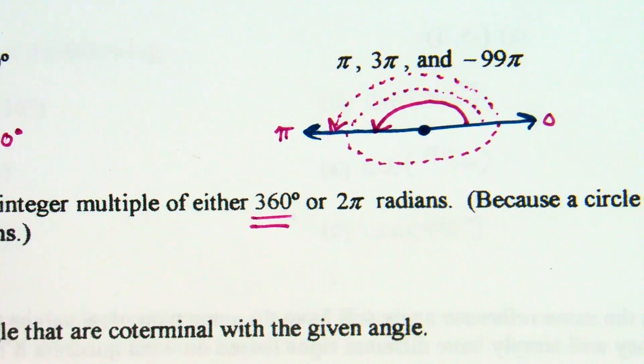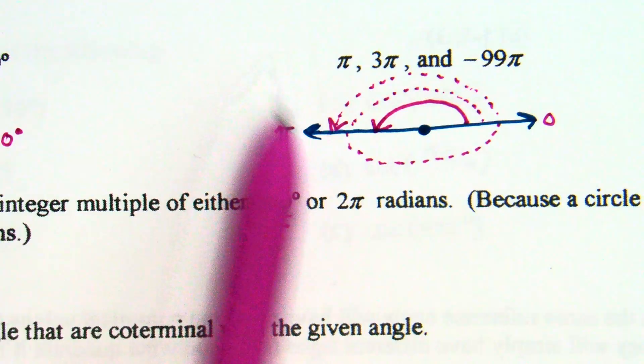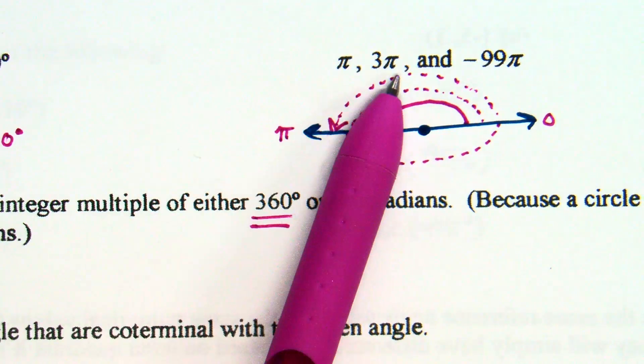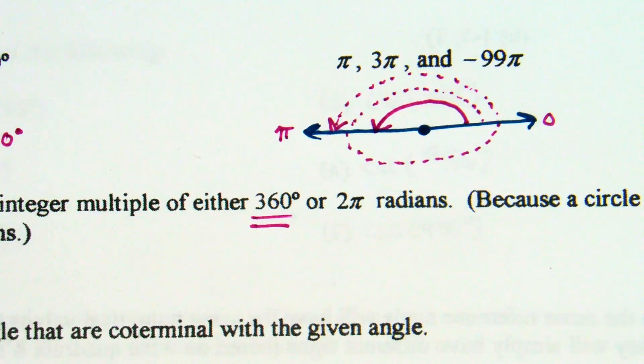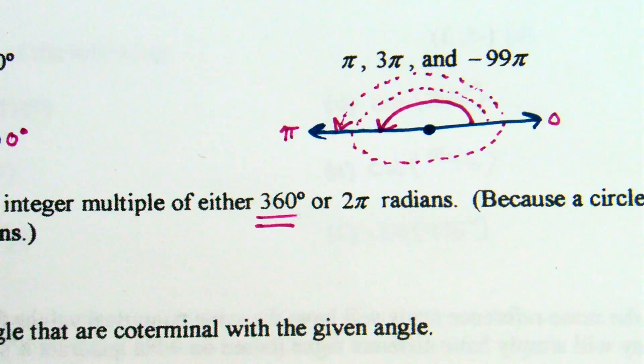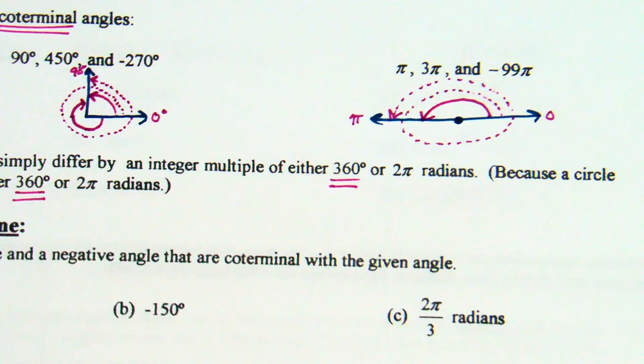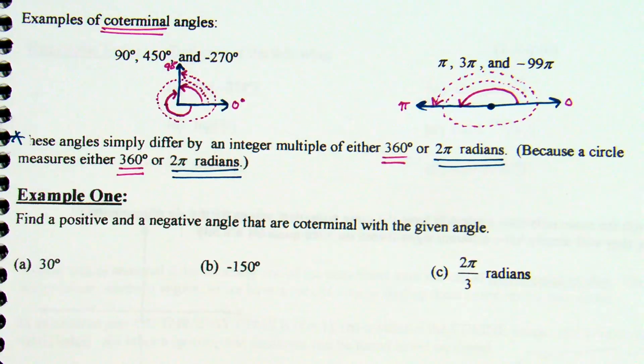Now, and as you notice, over here, I was able to prove to you that we could add and subtract 360 each time. Over here, because we're working in radians, my proof is that I can add and subtract 2 pi, or multiples of 2 pi. So one pi plus 2 pi takes me to 3 pi. Here, if I take one pi and I subtract 2 pi, I'm at negative one pi. If you keep subtracting 2 pi a bunch more times, you're going to be at negative 99 pi, because you're always going to be on the odds. Are you seeing the idea of how this works with coterminal angles? Because in this next section, these angles simply defer by an integer multiple of either 360 or 2 pi radians. And that's because a circle either measures 360 degrees or 2 pi radians.